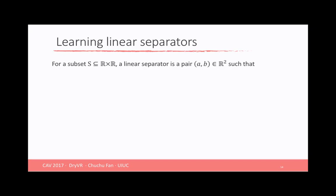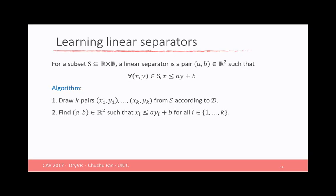For a subset S on the plane, a linear separator is a pair (a, b) that defines the line such that the subset lies on only one side of the line. There's a very simple algorithm to find this line. First, we draw k samples from the subset according to a distribution. Then we find the line such that all the sample points lie on one side of the line. So it's very simple and straightforward.